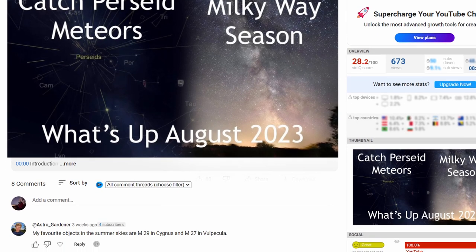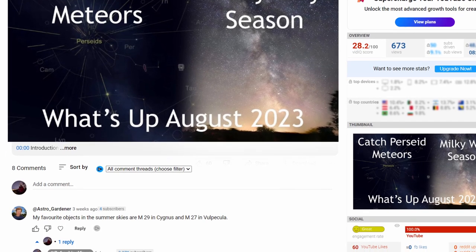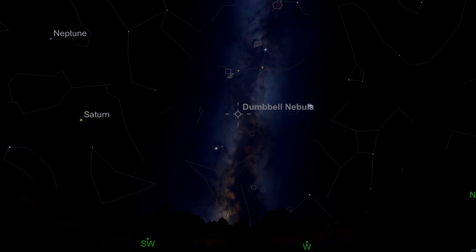In our last video we asked what was your most favourite object in the summer Milky Way and Peter wrote in and said that his was M27, the Dumbbell Nebula. So let's do a deep dive into that.